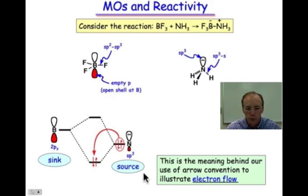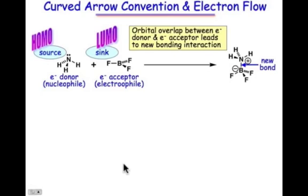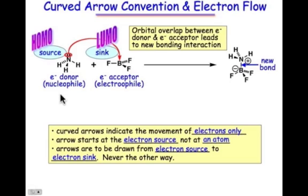We call these the source and the sink. Our source, or our HOMO, is the non-bonding pair of electrons. That curved arrow convention shows that that pair of electrons attacks the boron atom — that p orbital centered on boron — to make this new nitrogen-boron sigma bond.